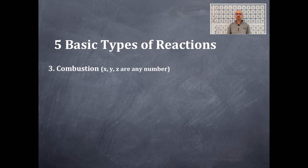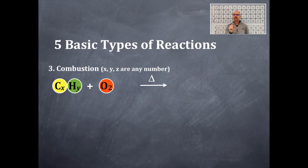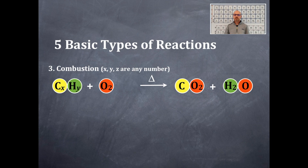The next one is a combustion reaction. I'm going to have a carbon and a hydrogen — CₓHᵧ — plus O₂. The O₂ is molecular oxygen; remember, it's diatomic. The carbon has X and the hydrogen has Y, and X and Y can be any number. Notice that above the arrow there's a delta sign, meaning heat is necessary for this reaction to go forward. All combustion reactions will have the same products: carbon dioxide and water.